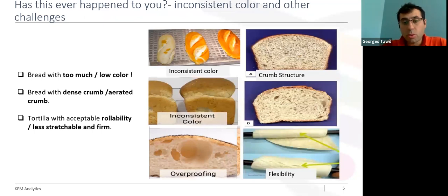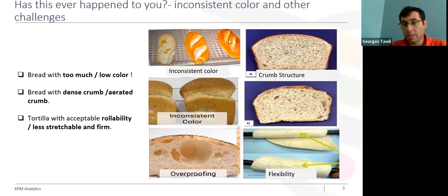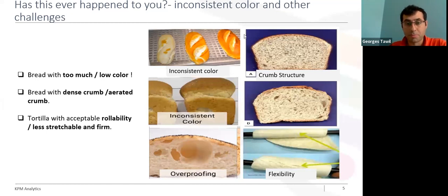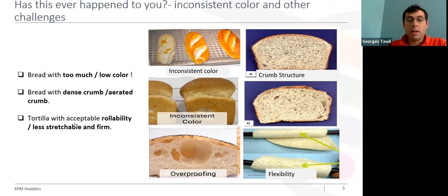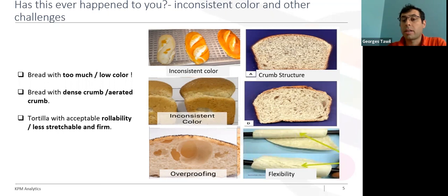There are also technological challenges related to color of finished product. For example, in the bread industry you can get finished bread with too much color, and you can also experience bread with low color, which is sometimes not appealing to consumers. You can also experience variation in the crumb structure — too dense or too open. In the tortilla industry, you can face challenges like problems with rollability, stretchability of the dough, and firmness of the finished product.